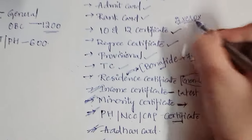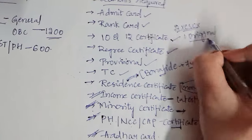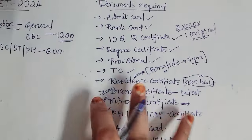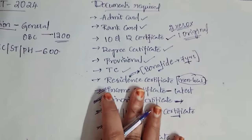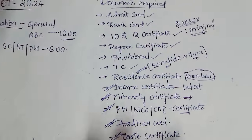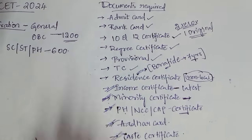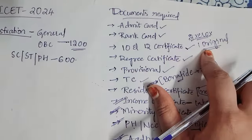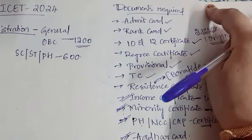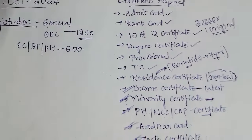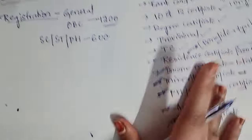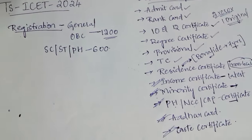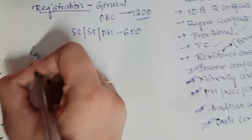You also need your Aadhar card and caste certificate. All these certificates are required for the counseling. You need to bring two xerox copies and one original set with you for the offline counseling. You have to select a counseling center nearby your area to proceed.